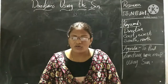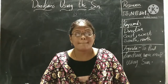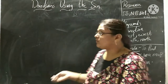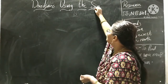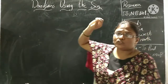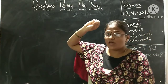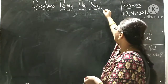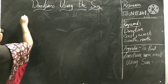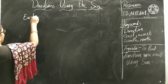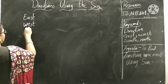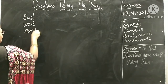But today we are going to discuss finding directions by using the sun. How many directions do we have? We have four directions. What are they? East, West, North, South.